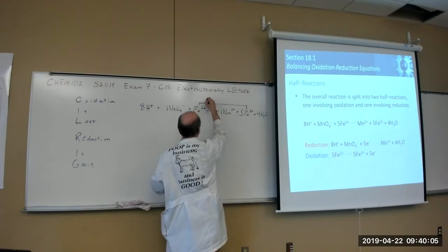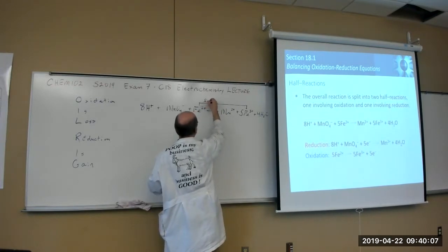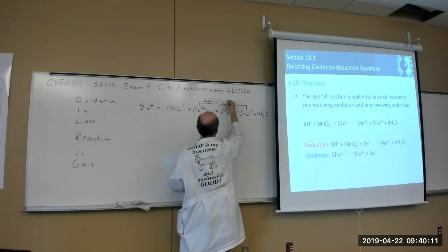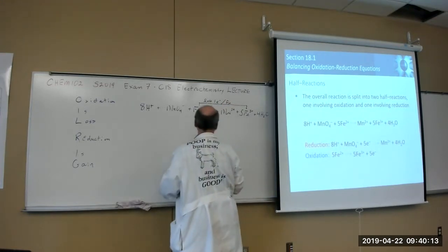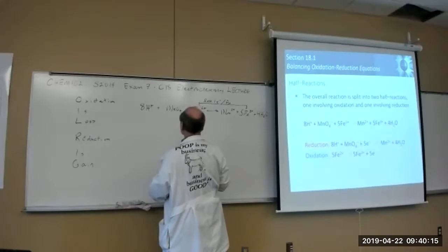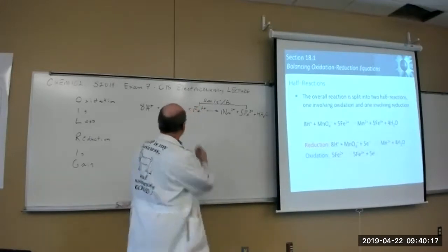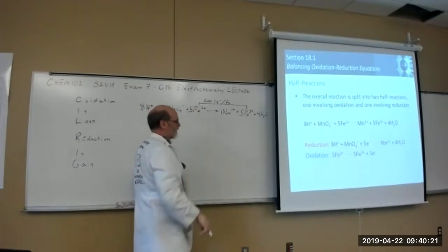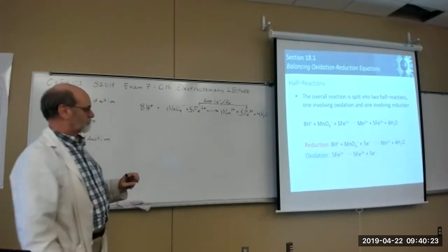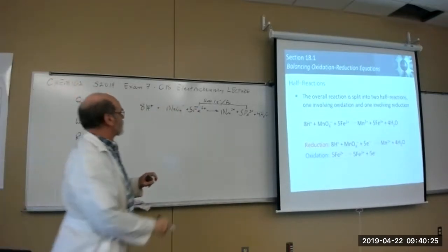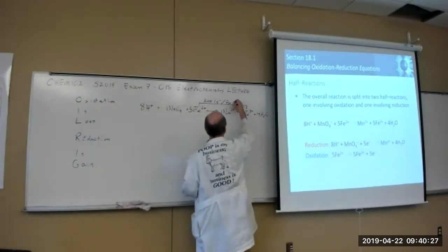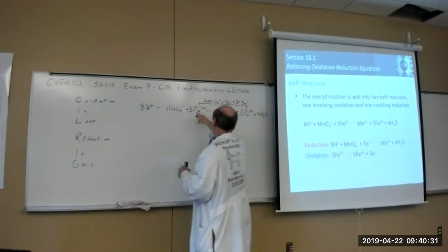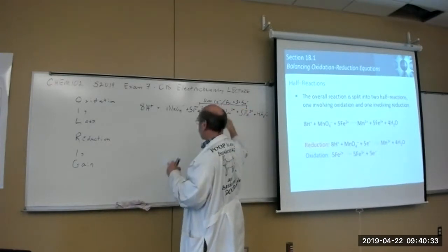Now it's balanced. Lost five electrons total — five times one equals five electrons transferred. But where do they go? You can't just have electrons floating around.